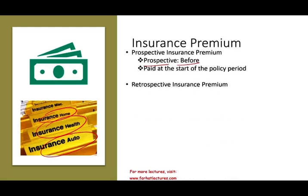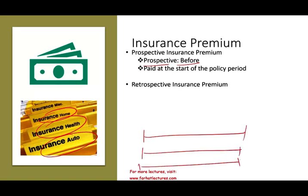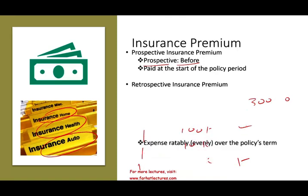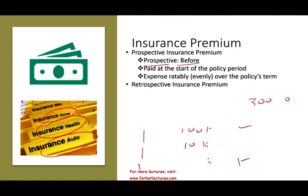When healthcare providers pay for prospective insurance, they expense it over the policy term. If they pay for two years, they expense it over two years. If they paid $300,000 for three years, every year they will expense $100,000. So it's pretty straightforward — you expense it evenly over the policy term.